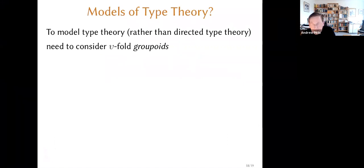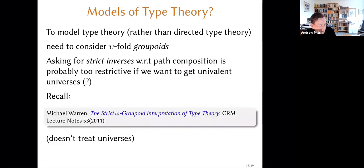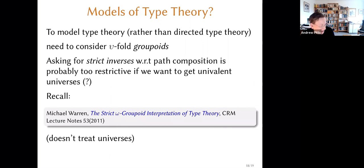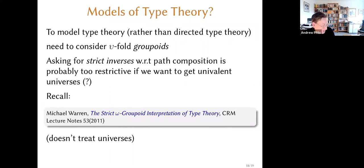To get towards the end of this talk, if you're going to model type theory rather than directed type theory, you'd need to consider groupoids rather than categories. You could consider just the definition I had but asking that the paths have strict inverses with respect to composition — so that's going to be like the equivalent of a strict omega groupoid — but I'm sure that's too strict, too strong. The model of type theory that Awodey and Warren look at with strict omega groupoids doesn't, as far as I know, have univalent universes. They don't really treat universes in that work at all.